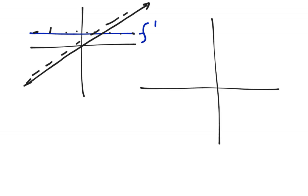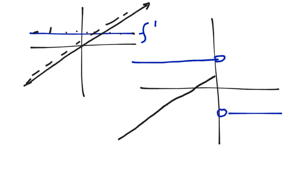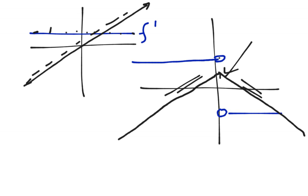I could do something like this, where f prime starts out positive and then switches to negative. Here f prime is positive, so f is going to be increasing up to this point right here. Then it stops increasing, and after this it's going to be decreasing because it starts having a negative slope. You could think of this as a flipped upside-down absolute value graph. It's not differentiable at that sharp turn, but the slopes are positive on one side and negative on the other.